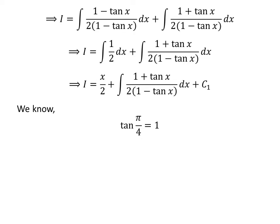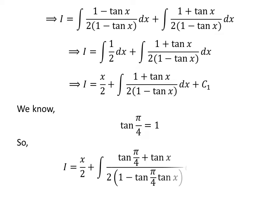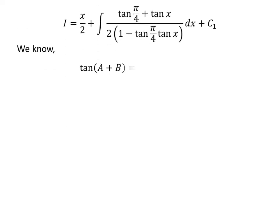We know tangent of pi upon 4 is equal to 1. We also know the trigonometry identity: tangent of a plus b is equal to tangent of a plus tangent of b upon 1 minus tangent of a times tangent of b. A card in the upper right corner contains the video explaining the proof of this identity, and the link is also given in the description.